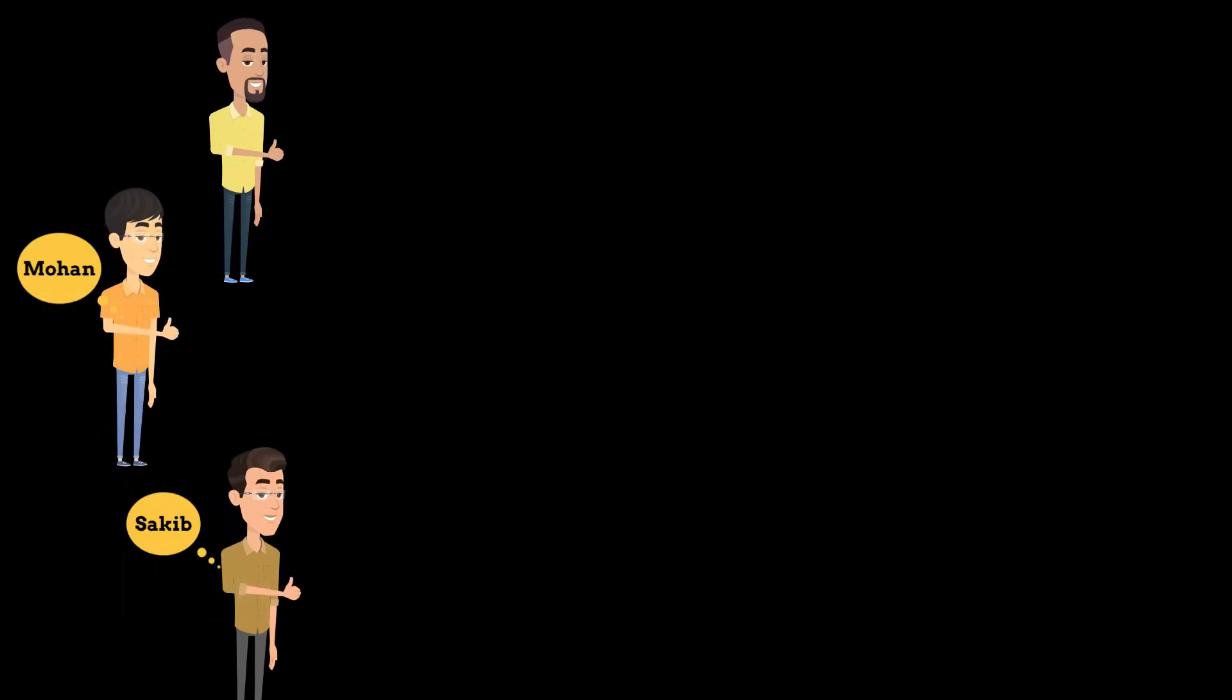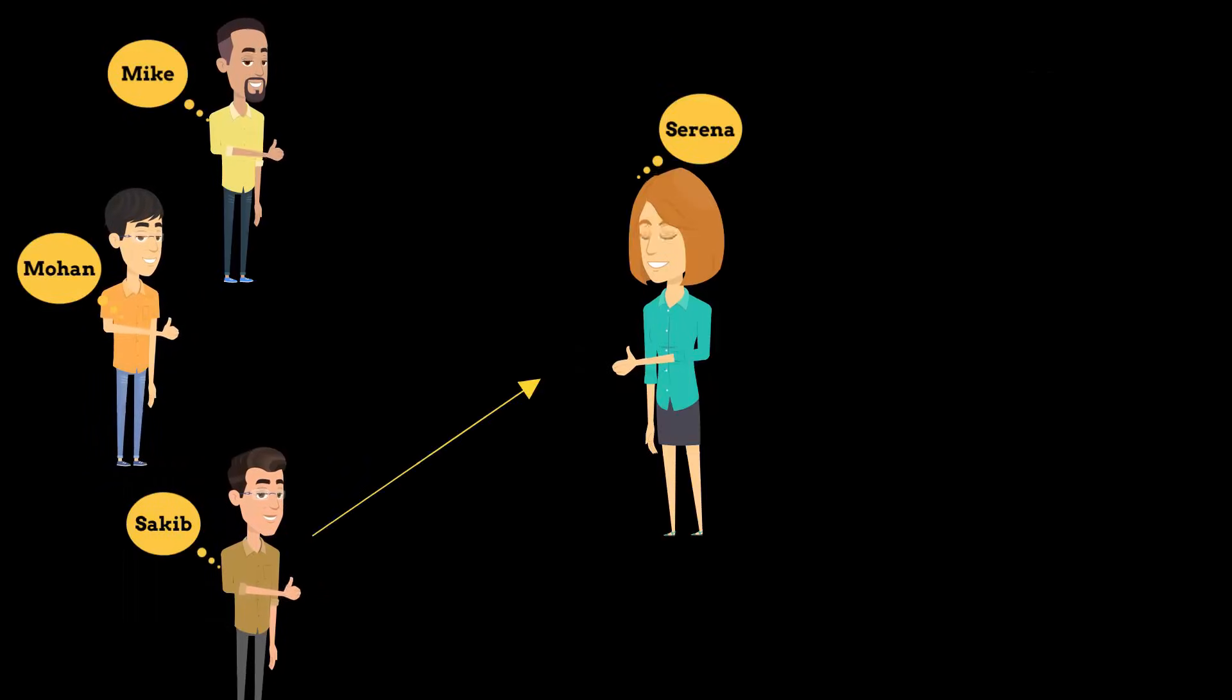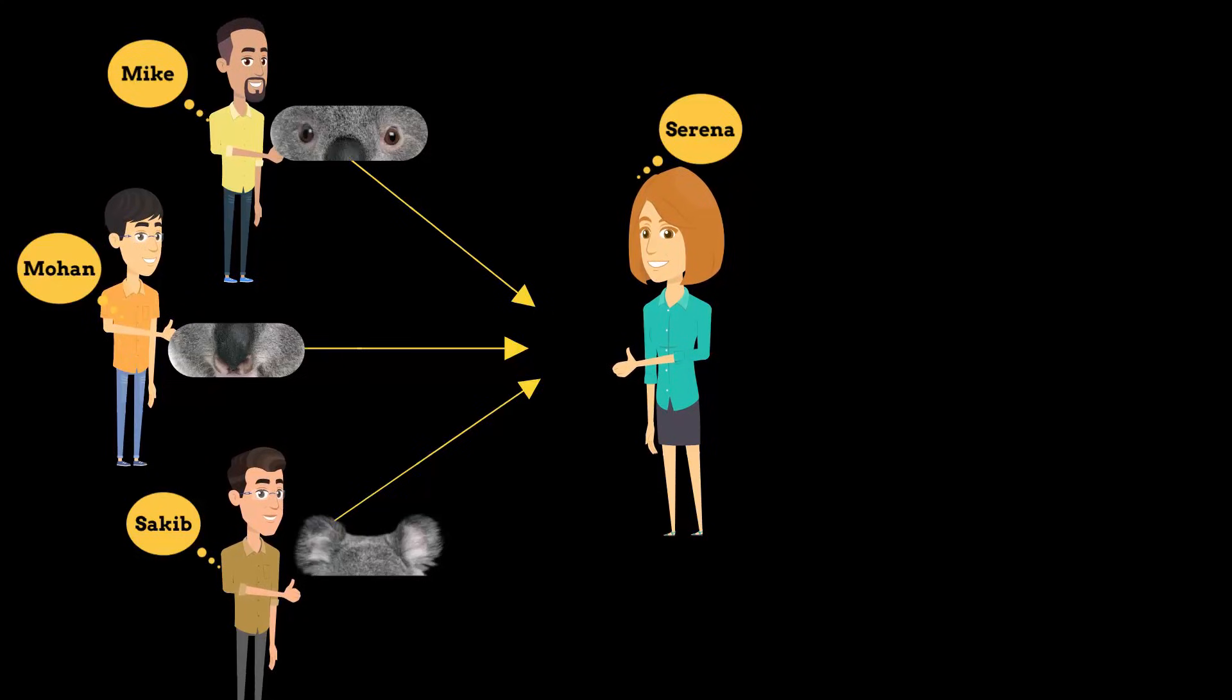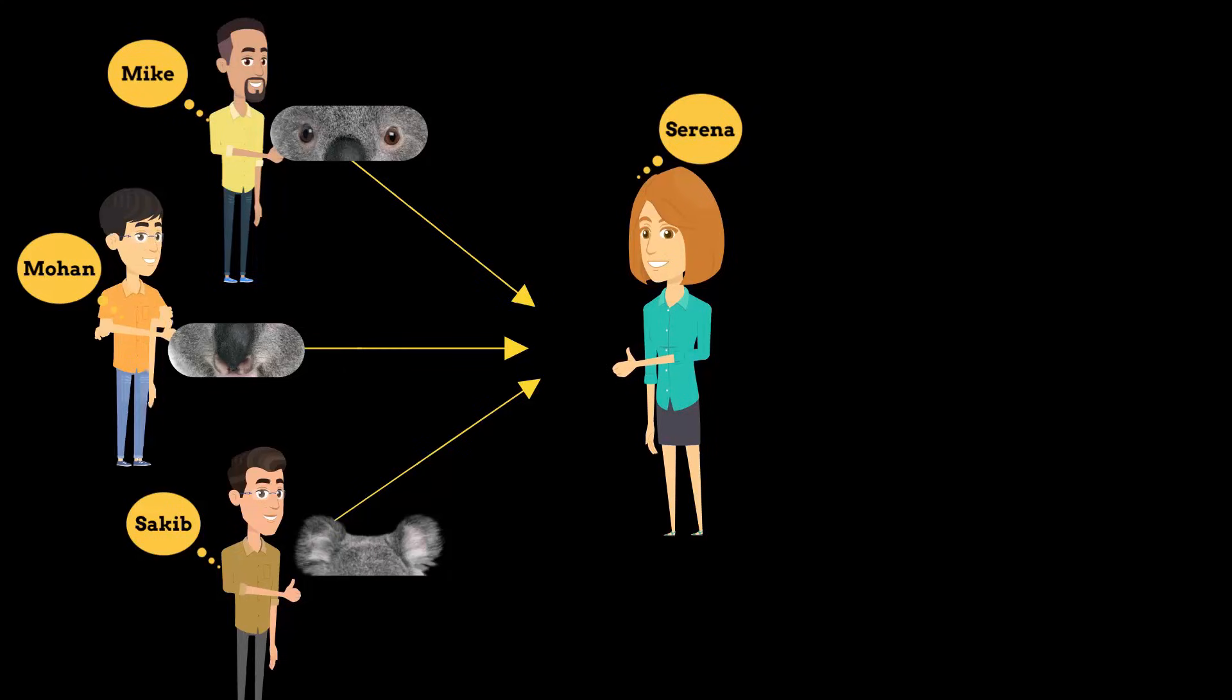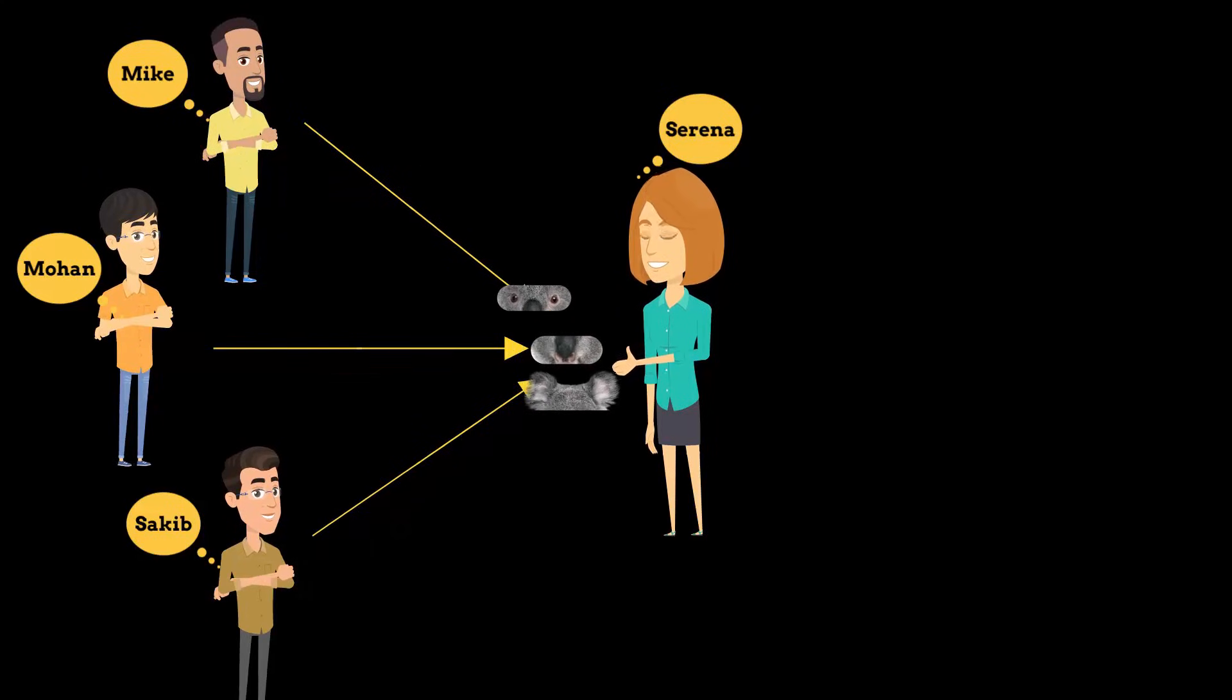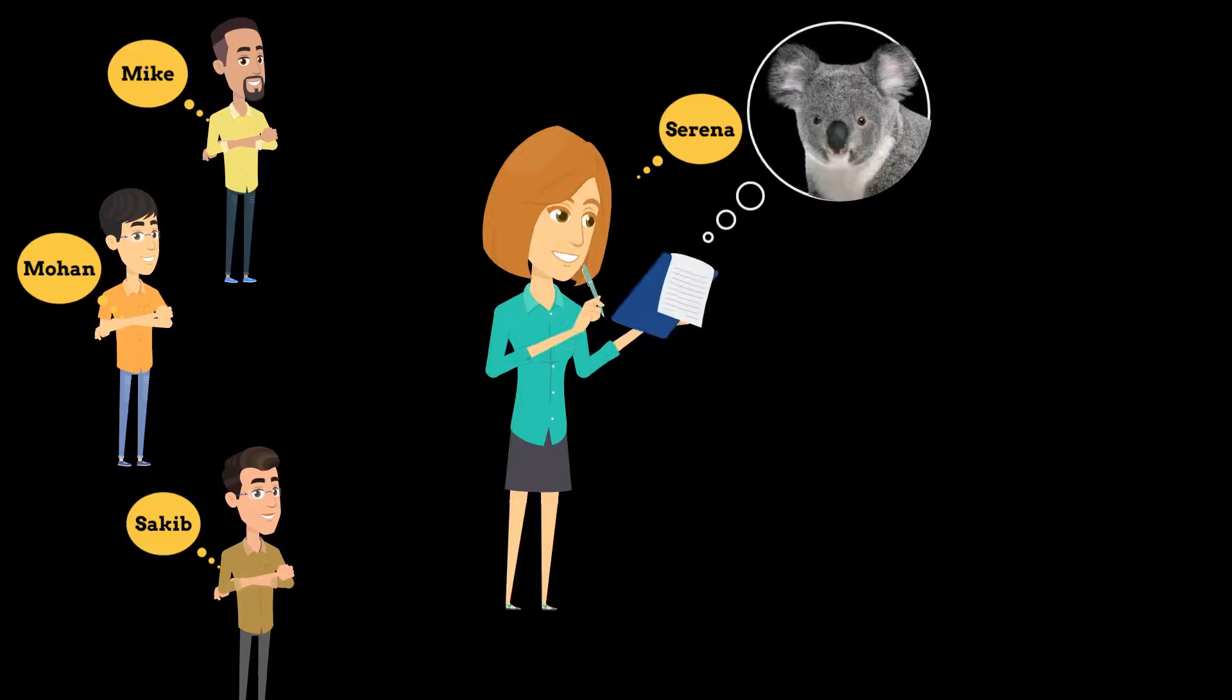You can extend this collaboration further and make Shakib an ear detection expert, and then these three students can go to Serena, and Serena can work on deciding if the image has koala's face or not.